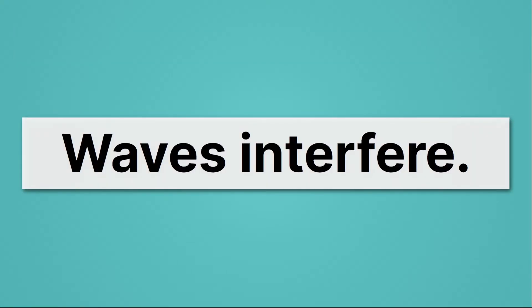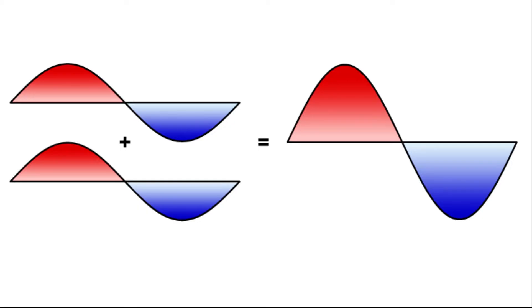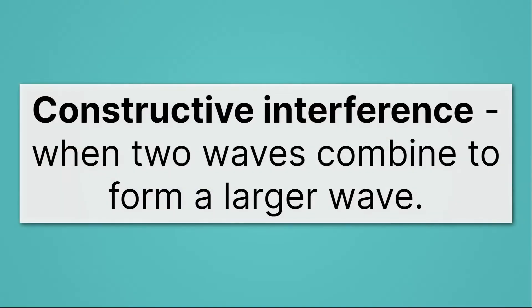So in our unit on waves and their interactions, we talked about how when peaks and troughs of two separate waves overlap, they make a bigger wave. We call that constructive interference, when two waves combine to form a larger wave.